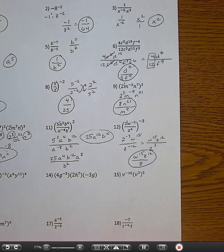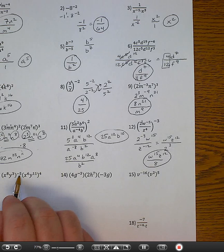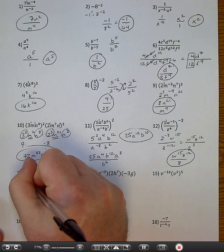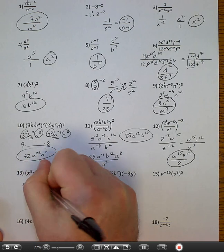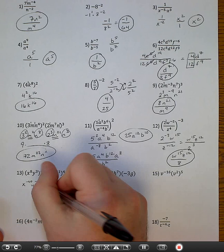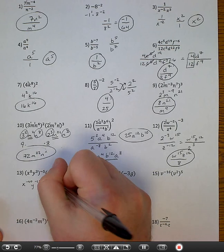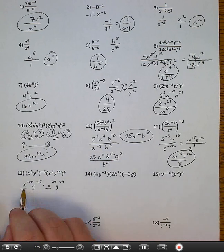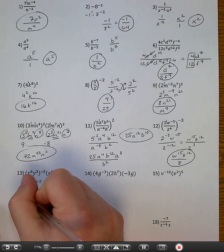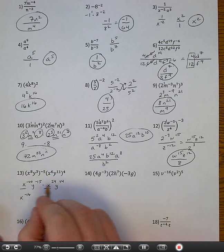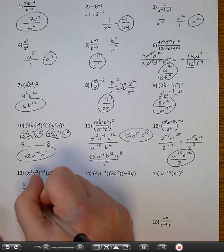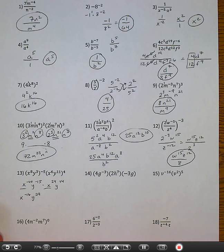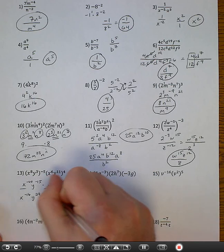Thirteen. Each exponent gets multiplied by negative five in the first set of parentheses, so I have x to the negative fortieth, y to the negative fifteenth. Everything gets multiplied by four in the second set of parentheses, so x to the twenty-fourth, y to the forty-fourth. Now I'm going to put them together: negative forty plus twenty-four is negative sixteen, negative fifteen plus forty-four is twenty-nine. Move the x to the bottom: I get y to the twenty-ninth over x to the sixteenth.